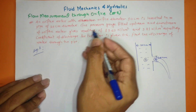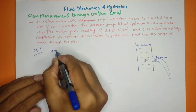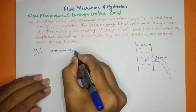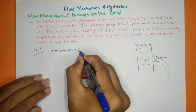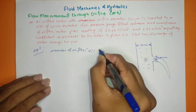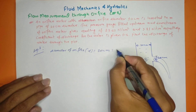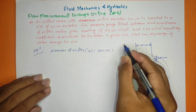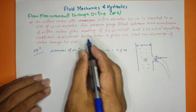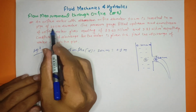The diameter of the orifice is given as 0.1 meter. Now we have to use the given data to set up the pipe and flow calculations.